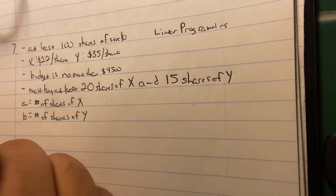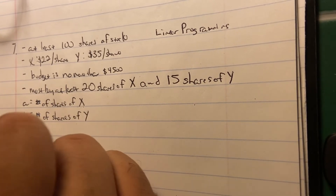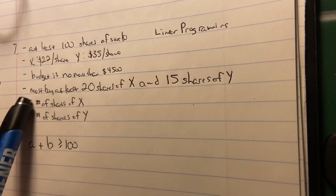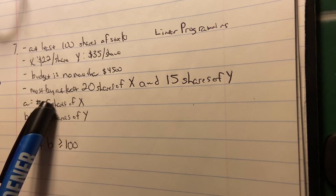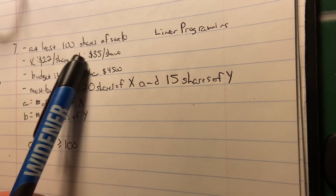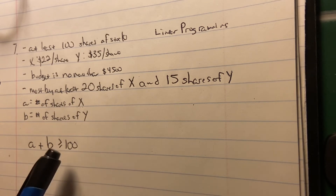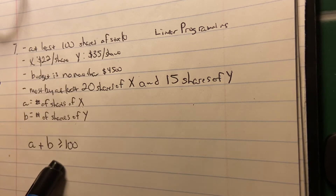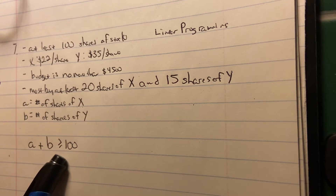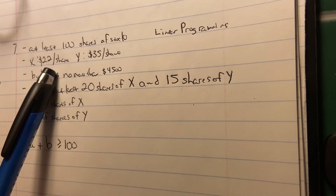Our first inequality is A plus B is greater than or equal to 100, because A and B represent the shares of stock X and stock Y. When you add them up, you need at least 100 shares altogether — it could be 100, 101, 200, 300 — but other parameters will limit you, since you probably won't have enough money to buy 10,000 shares.